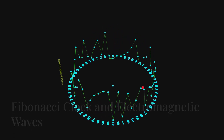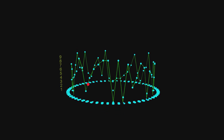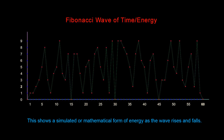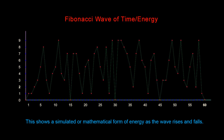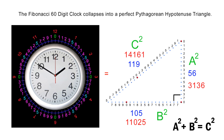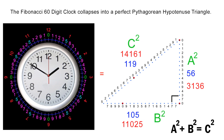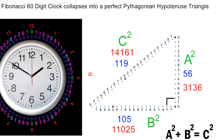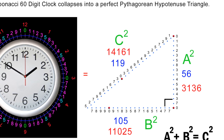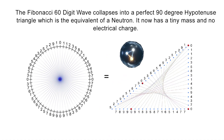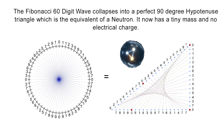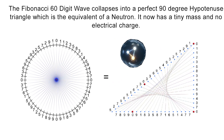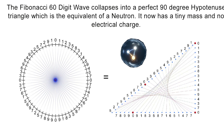In the last video, we saw how the Fibonacci 60-digit clock is actually an electromagnetic wave of mathematical information, which contains mathematically encoded forms of all the fundamental forces of nature. In this episode, we will see what happens when the Fibonacci 60-digit clock, or wave of information, collapses into a perfect Pythagorean 90-degree hypotenuse triangle. All you really need to know is that the Fibonacci wave of information collapses into a triangular particle used to construct the universe.